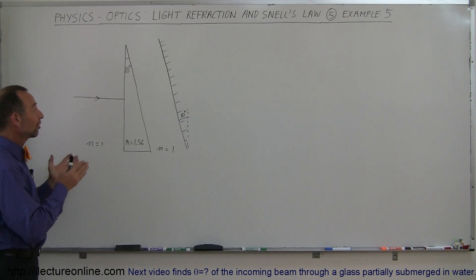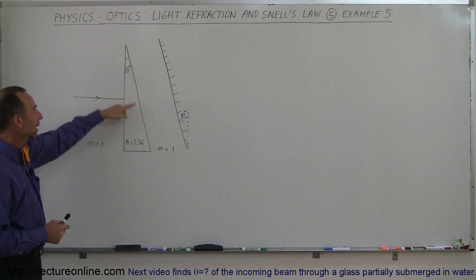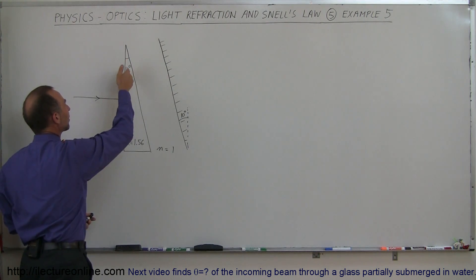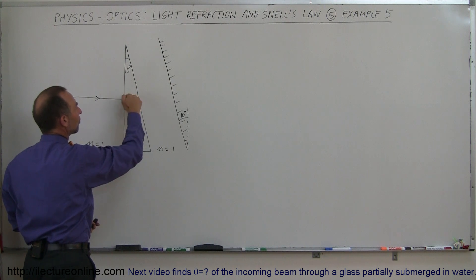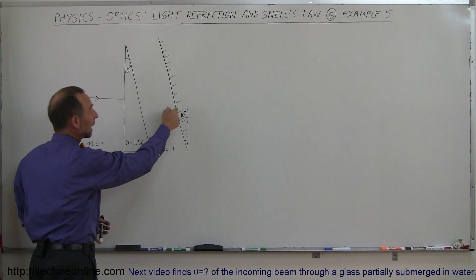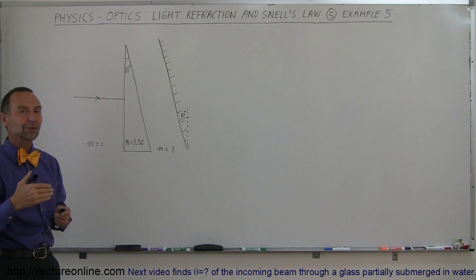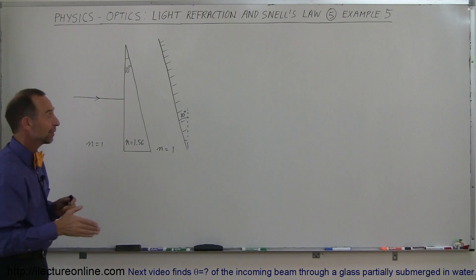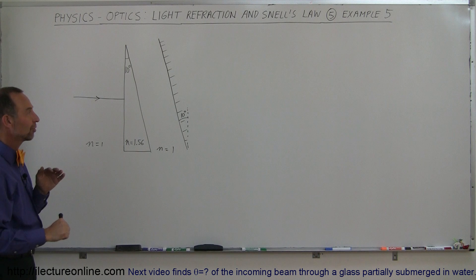Welcome to our lecture online. Here we have an interesting example: a beam of light traveling through the air hitting a glass prism with an index of refraction of 1.56. Notice that the angle at the top is 10 degrees. The beam enters the prism, goes through to the other side, and refracts across the other boundary. At that point the refracted light hits a mirror and is reflected, and the question is what is the final direction of the reflected beam?